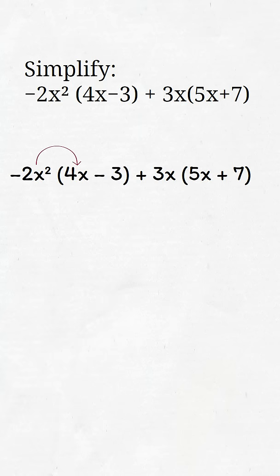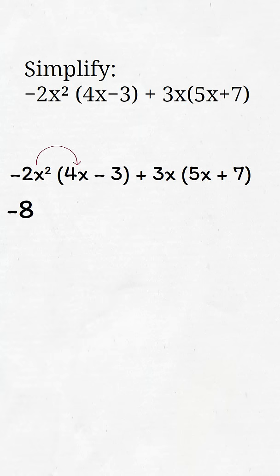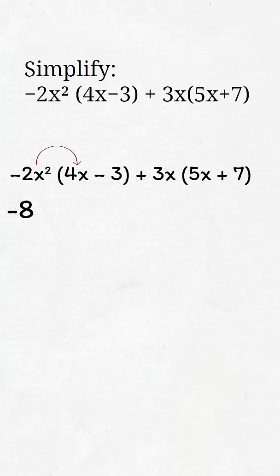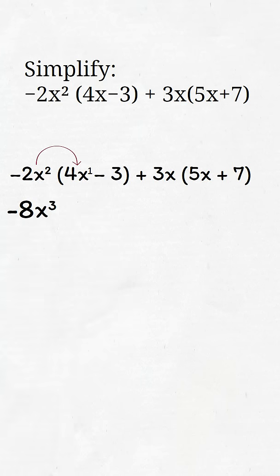Negative 2x squared times 4x. We multiply the numbers, negative 2 times 4 is negative 8. Then we add the exponents of the x. We have 2 plus 1, so we have x exponent 3.